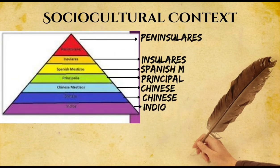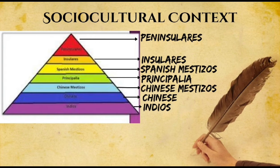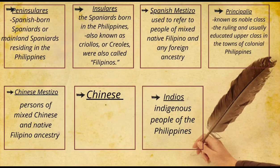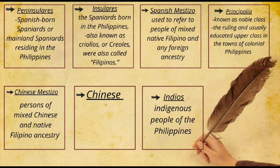To better understand the social cultural context of the Philippines during that time, here is the social hierarchy from top to bottom: first the peninsulares, second the insulares, third the Spanish mestizos, fourth the principalia, fifth the Chinese mestizos, sixth the Chinese, and lastly the Indians. Here are some definitions for these terms.